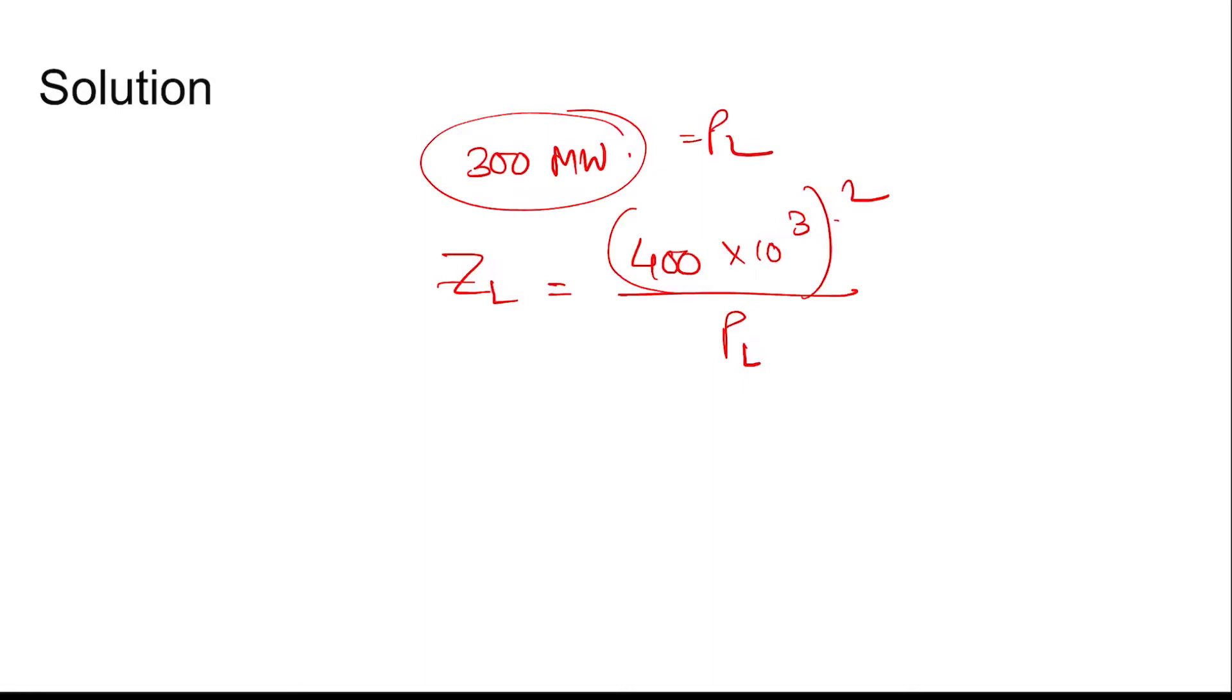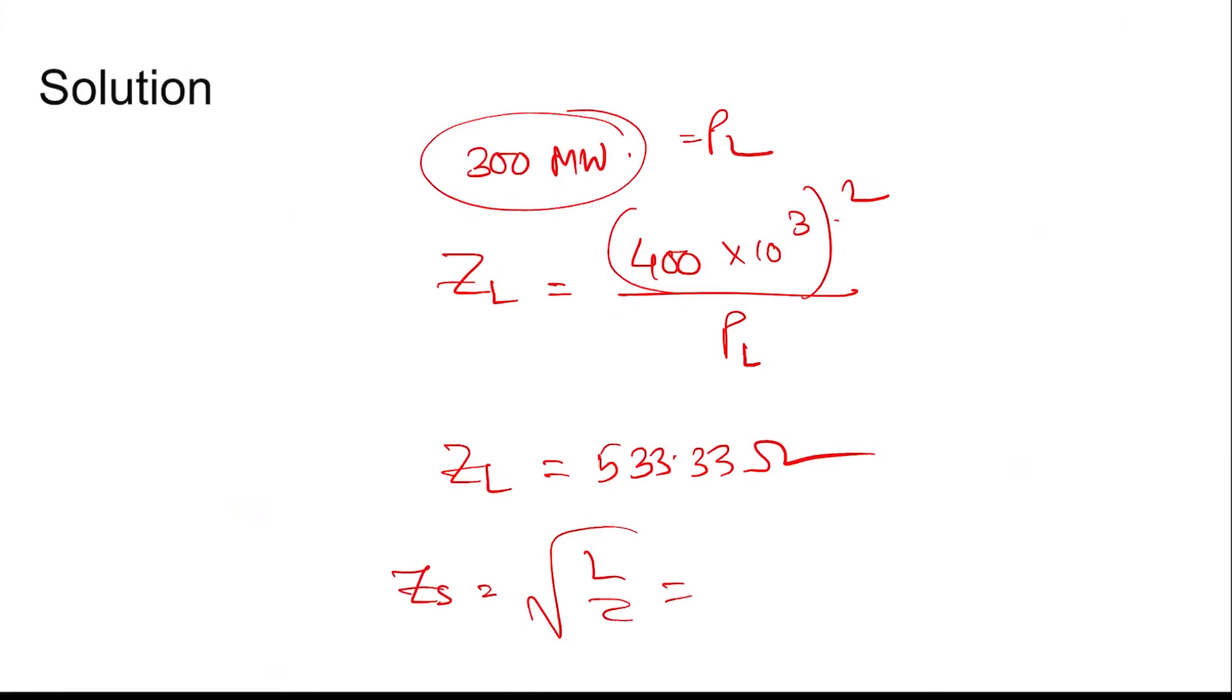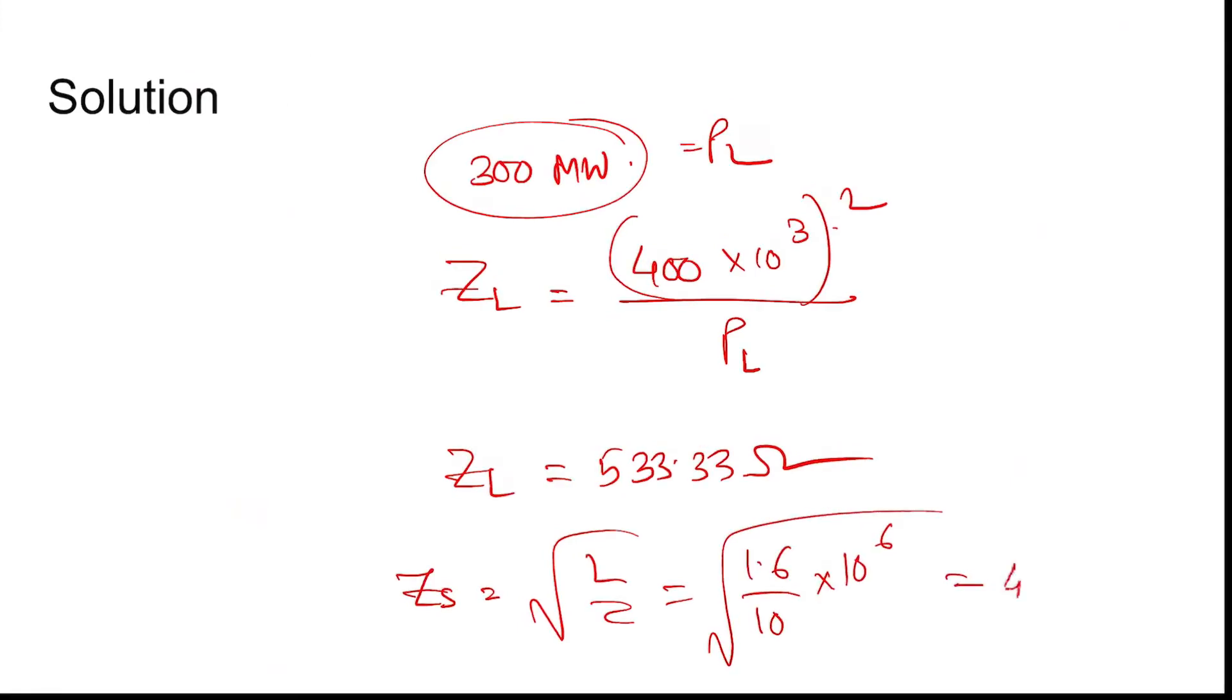PL is 300 MW, so ZL is coming out to be 533.33 ohms. The surge impedance is root of L by C, which is - this is milli, this is nano - so 10 to the power 6 factor will come: 1.6 by 10 times 10 to the power 6, whole root over. So this is coming 400 ohms. We see that the loading is less because ZL is more than Zs.